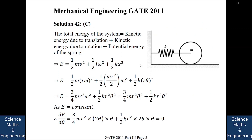The total energy of the system equals kinetic energy due to translation plus kinetic energy due to rotation plus potential energy of the spring: E = (1/2)mv² + (1/2)Iω² + (1/2)kx². Writing v = rω and the moment of inertia of a disk as I = mr²/2, we substitute these expressions.